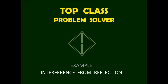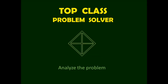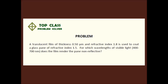Top class problem solver. The goal of this video is to help us learn to analyze the problem and communicate our solution effectively. A translucent film of thickness 0.50 micrometers and refractive index 1.8 is used to coat a glass pane of refractive index 1.5. For which wavelengths of visible light from 400 to 700 nanometers does the film render the pane non-reflective?